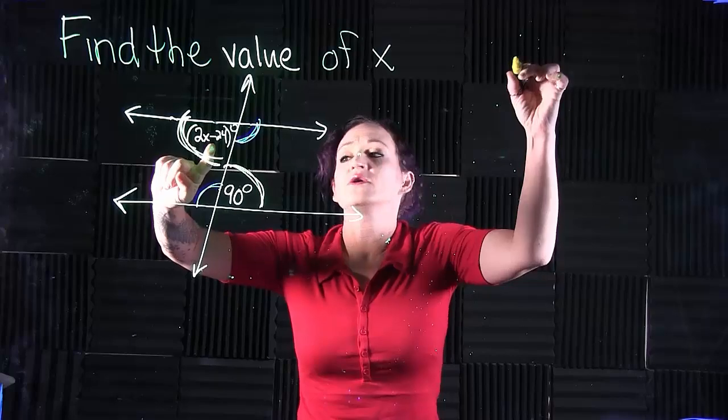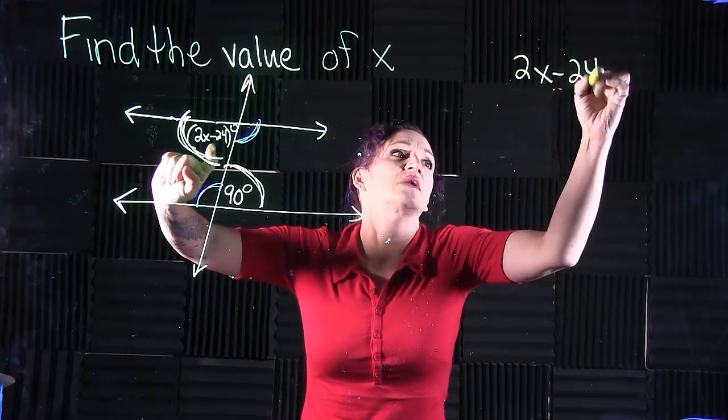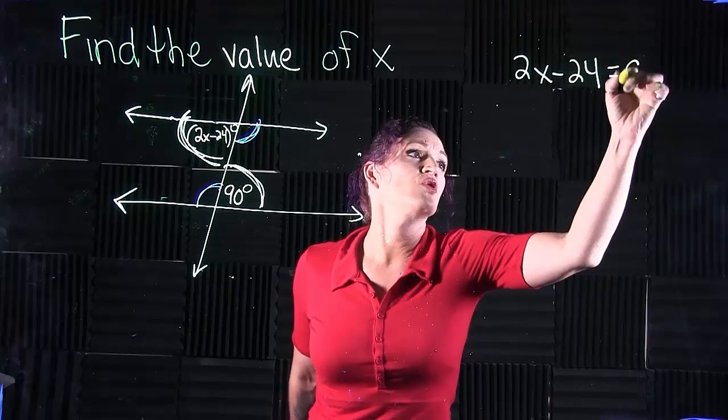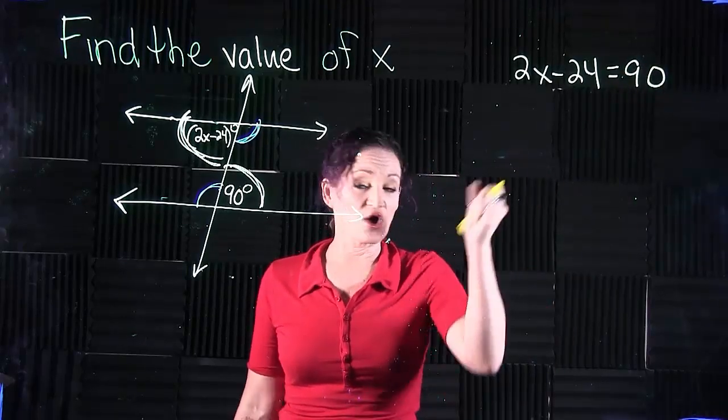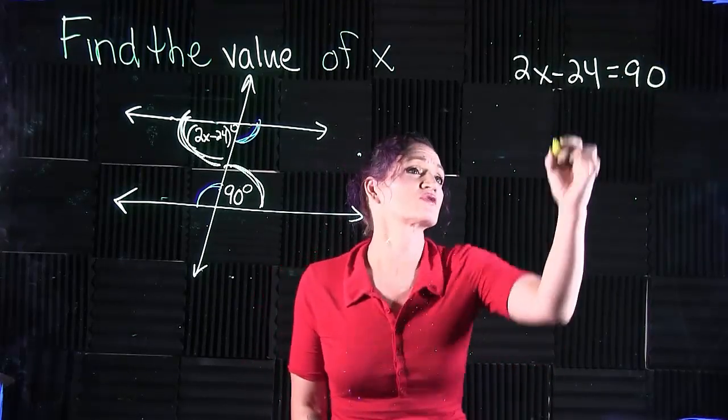This angle up here is 2x minus 24, and we're going to set that equal to the other angle, which is 90. To solve this equation,